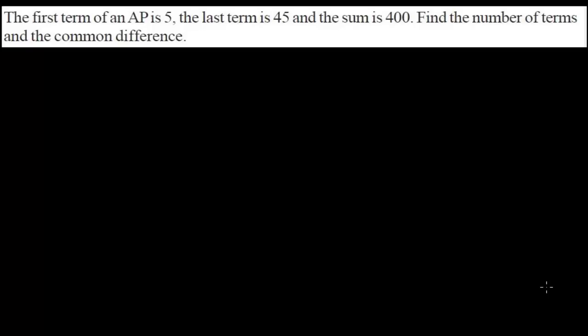Here is another type of problem of arithmetic progression related to the sum of n-terms formula. The question states: the first term of an AP is 5, the last term is 45, and the sum is 400. We need to find the number of terms and the common difference.